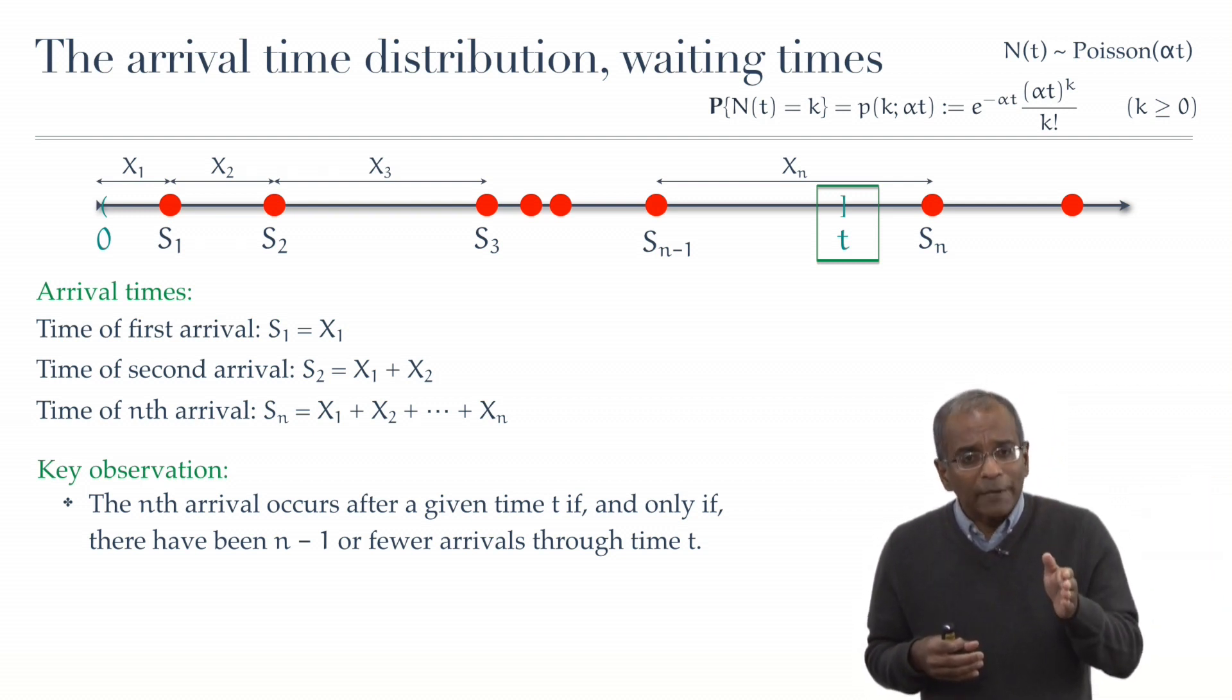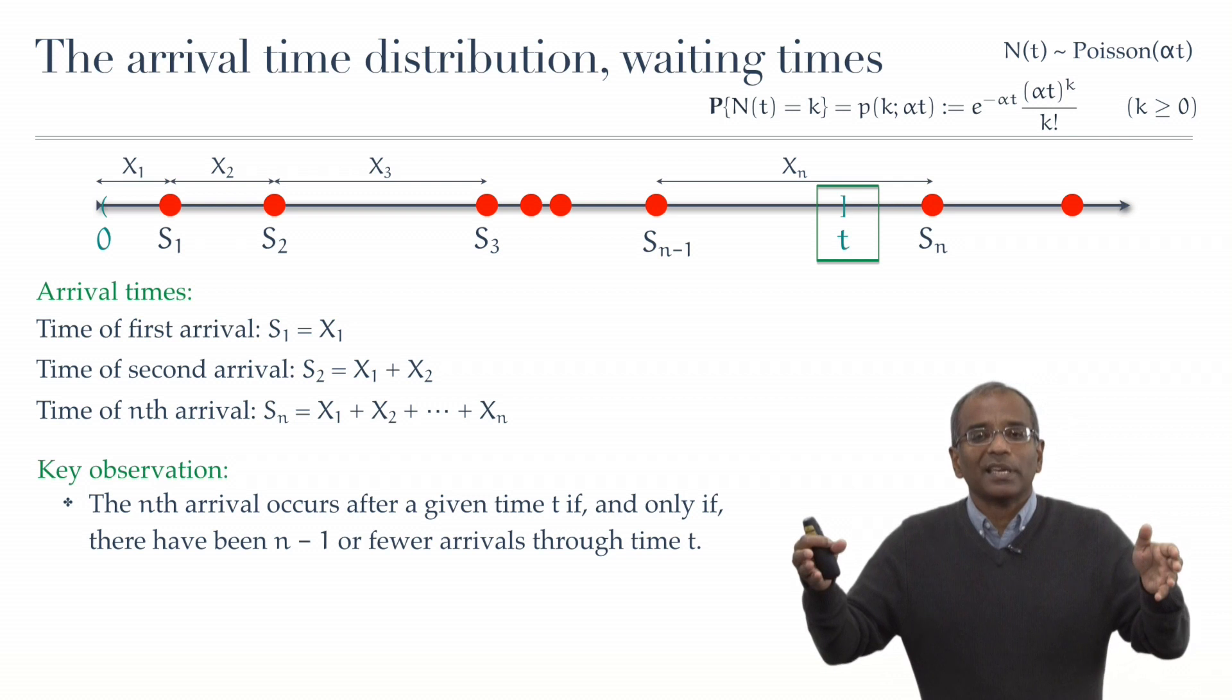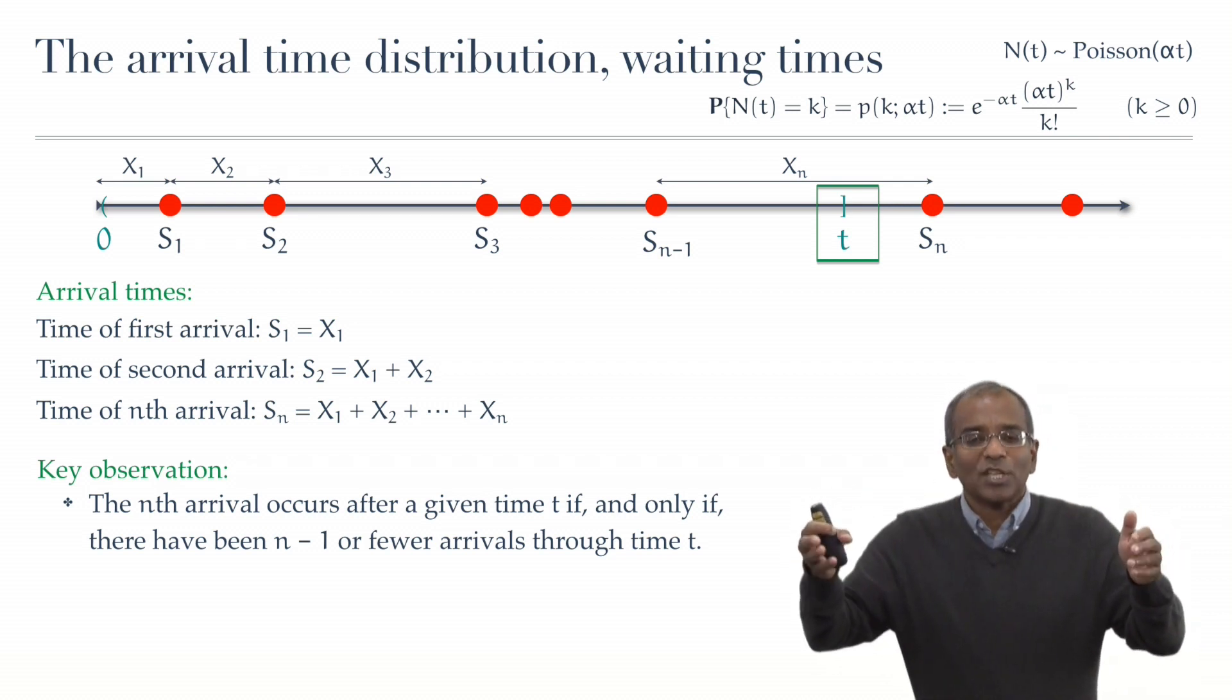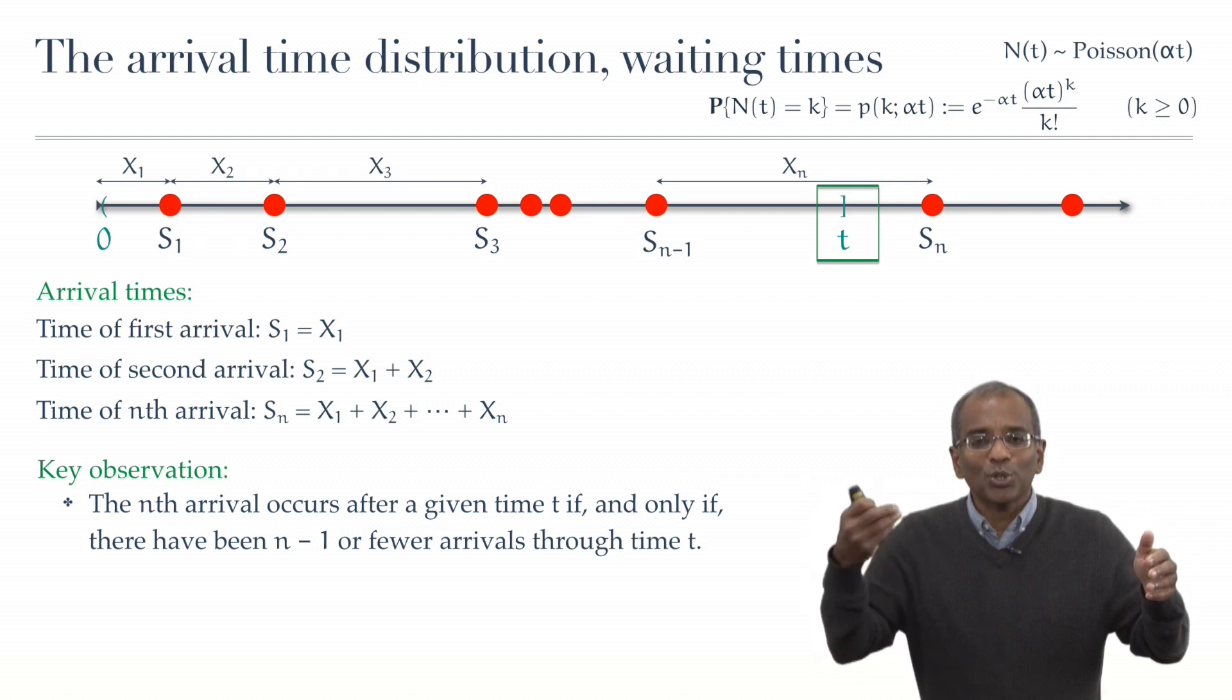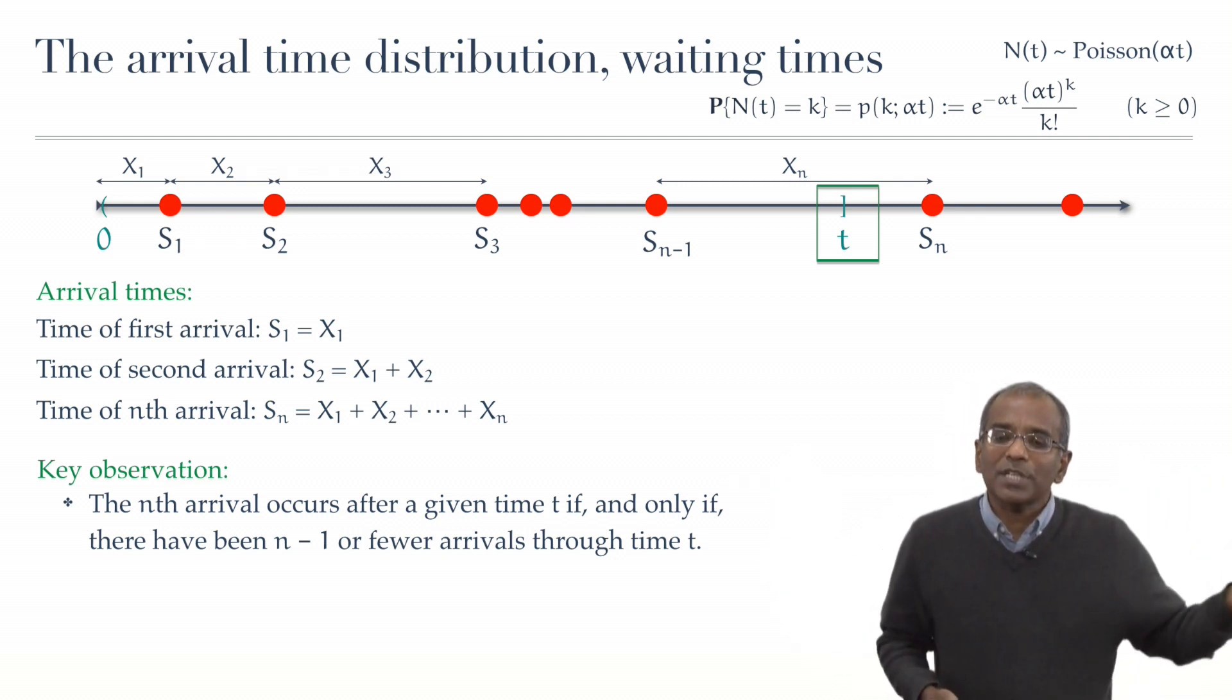Well, if the nth arrival occurs after a certain point in time t, then it is manifestly the case that the number of arrivals from 0 to t has to be either 0, or 1, or 2, up through n-1. You cannot have more than n-1 arrivals between 0 and t if the nth arrival is occurring after t.